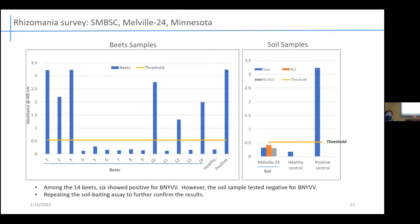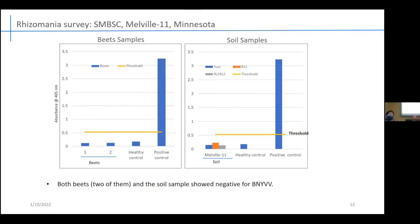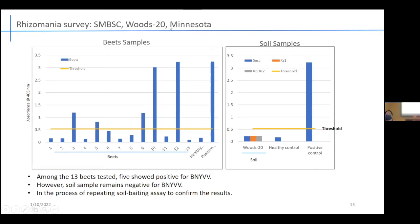For SMBSC, we surveyed three different locations. At Mariband 24, Minnesota, we got 14 beet samples — some were positive, others were negative; however, the soil sample remained negative for BNYVV. At Melville 11, we got just two beet samples, both turned out negative for rhizomania, and the soil sample also remained negative — a very matched correlation. At OTS 20, again SMBSC, some beets were positive and others were negative, but the soil sample remained negative. There is a discrepancy here, so we are repeating the assay.